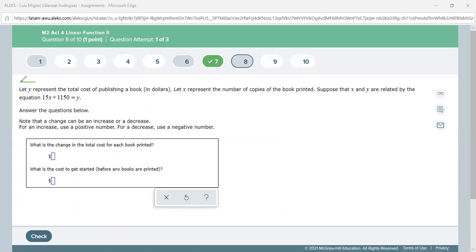Let y represent the total cost of publishing a book in dollars. They give us an equation here. Y is the total cost - I can write that y stands for cost of publishing a book in dollars.